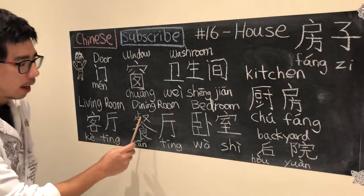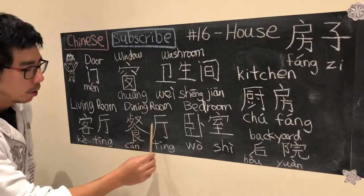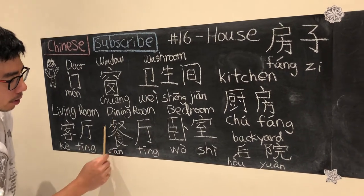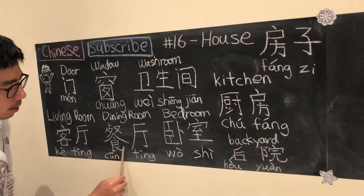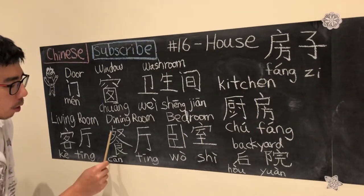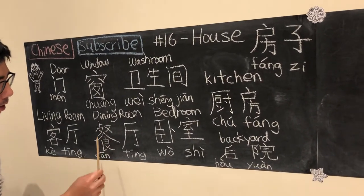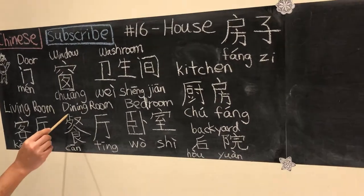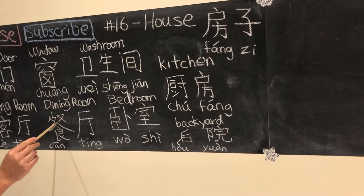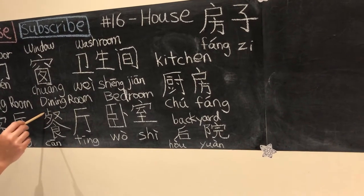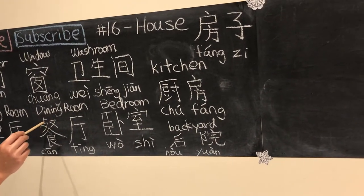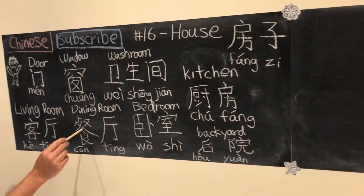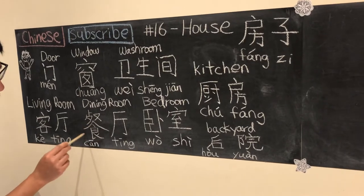Beside the 客厅, we normally have the dining room, which is also in an open area, so it also ends with 厅. The first character, 餐, means to eat or meal. So we say 餐厅. Pay attention to this character — 餐 is very complicated, but the lower part contains 食, which means to eat.